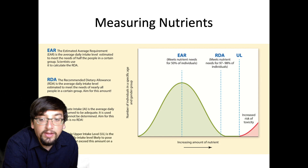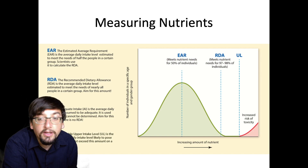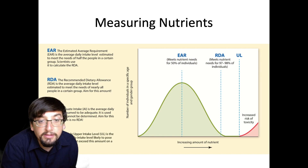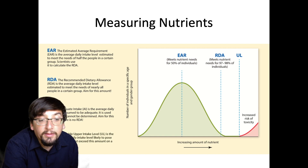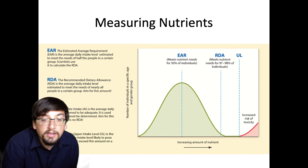The UL — Upper Tolerable Intake Level — is how much you can have before it starts being toxic. Some nutrients have very high ULs; for example, vitamin C's UL is so high it's practically impossible to reach a toxic amount under normal conditions. However, fat-soluble vitamins like vitamin A do have a meaningful UL — vitamin A toxicity is a real thing that does occasionally happen. Finally, if the EAR and RDA are not known, the AI — Adequate Intake level — is used as an estimate of what is sufficient.